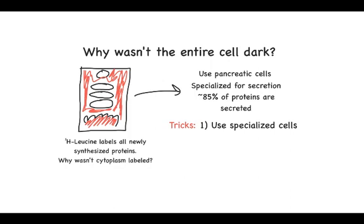When he used this cell type, he was able to get this beautiful result and a Nobel Prize. The tricks to this whole experiment: use a specialized cell. This is a very common concept you see in all cell biology.